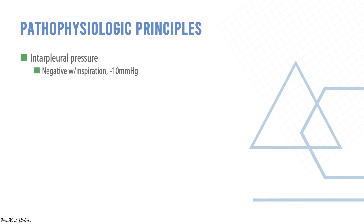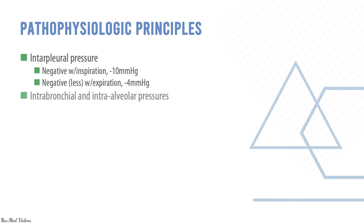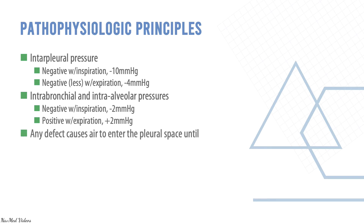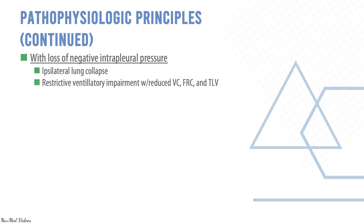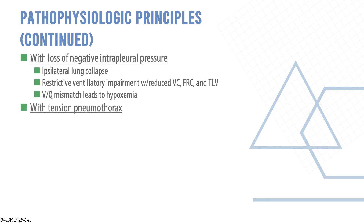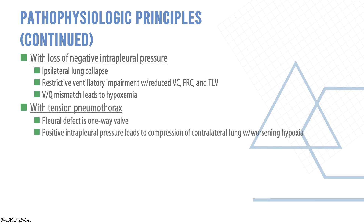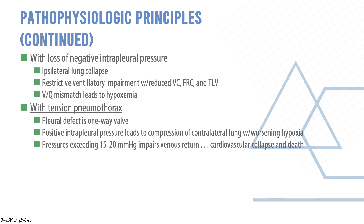Interpleural pressure is negative with both inspiration and expiration. Intrabronchial and intra-alveolar pressures are negative with inspiration and positive with expiration. Any defect causes air to enter the pleural space until pressures equalize or the defect seals. With loss of negative interpleural pressure, the ipsilateral lung collapses, causing restrictive ventilatory impairment, reduced vital capacity, FRC, and total lung volume, and a ventilation-perfusion mismatch leading to hypoxemia. In tension pneumothorax, the pleural defect acts as a one-way valve; positive interpleural pressure compresses the contralateral lung, and pressures exceeding 15–20 mmHg impair venous return causing cardiovascular collapse and death.